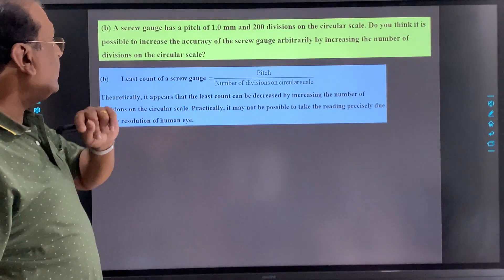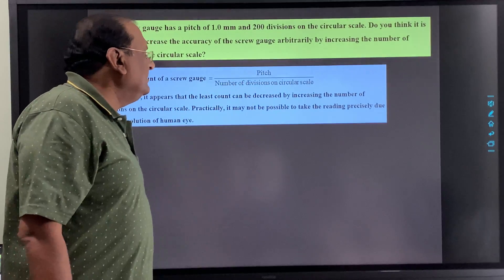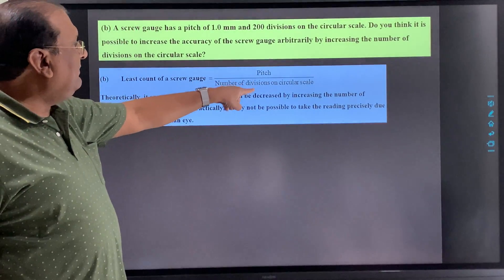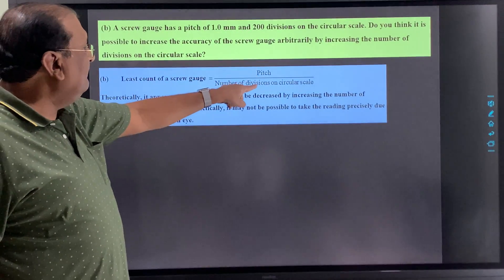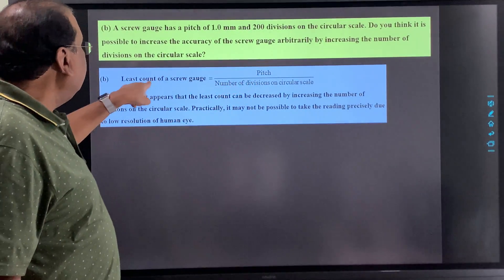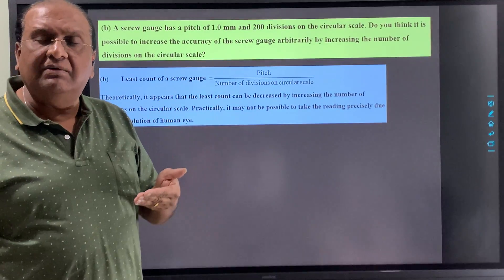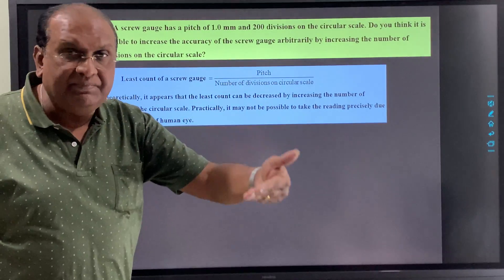Now we know this thing, least count is pitch upon number of divisions on the circular scale. So here we see that if we increase the number of divisions, the least count will decrease. If least count decreases, the instrument will be considered more precise.